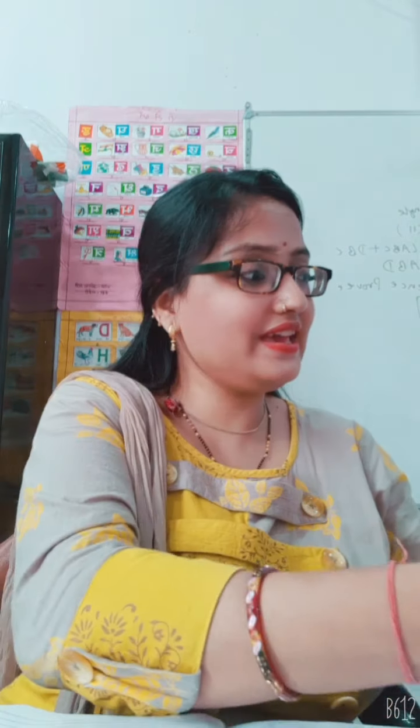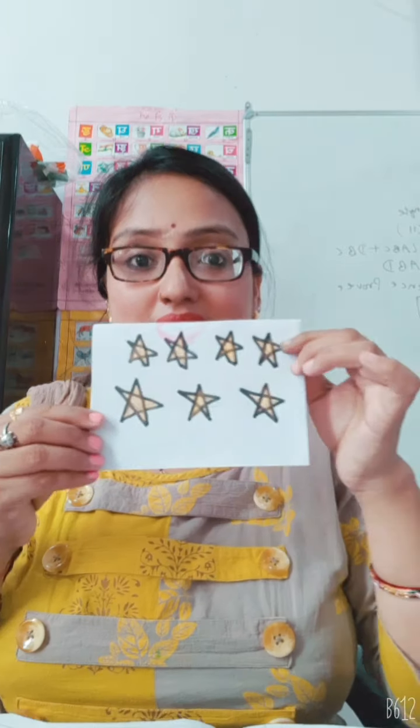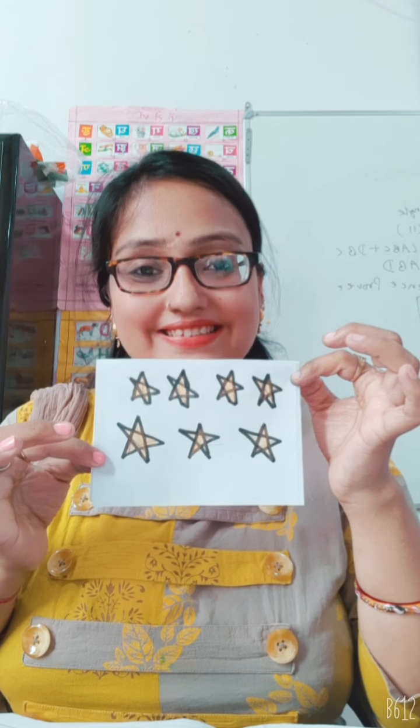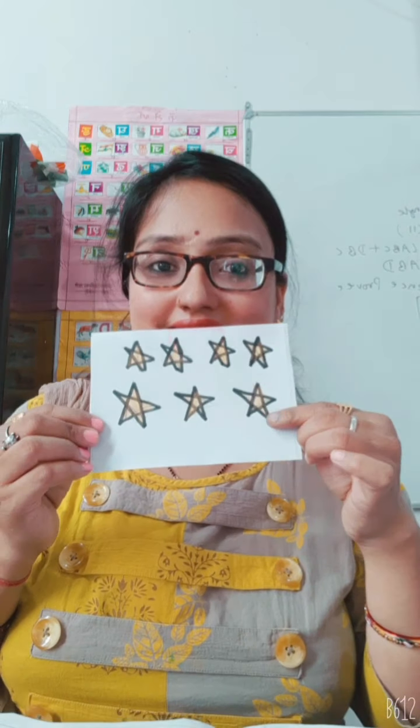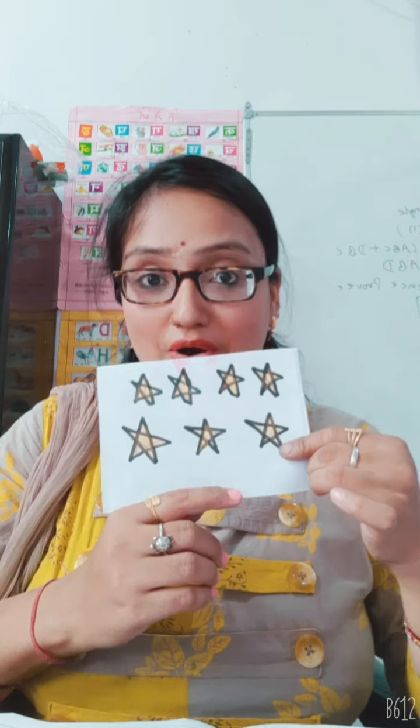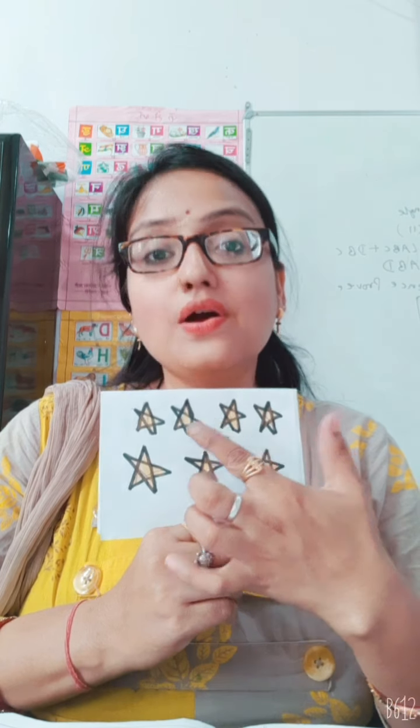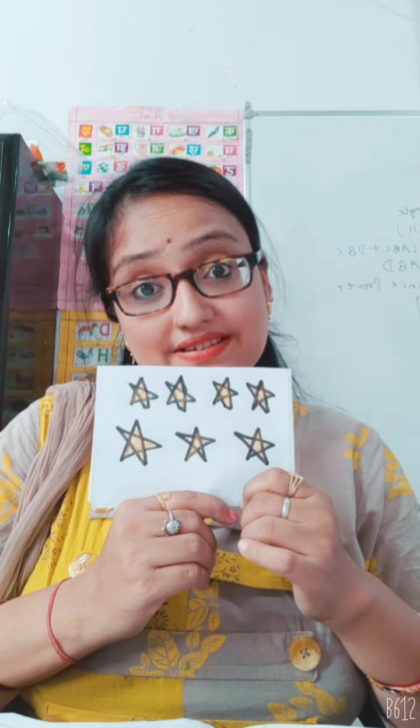And next picture is... stars. How many stars are there? We will count: 1, 2, 3, 4, 5, 6, 7. 7 stars. Here is 7 stars.